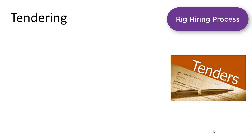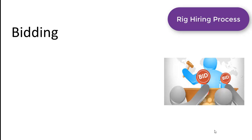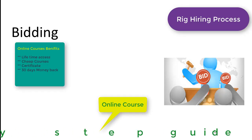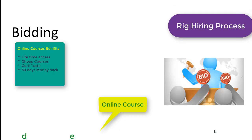Once the tendering document is submitted, different rig contractors who have rigs will prepare their proposal or bidding. The bidding is the response to the tendering — rig contractors will communicate their interest to the operator company with a document called a bidding or proposal. In the proposal, they will show that as per the operator's requirements their rig has specific specifications, and they will also provide their price, including the day rate, standby rate, rig mobilization cost, and related items.